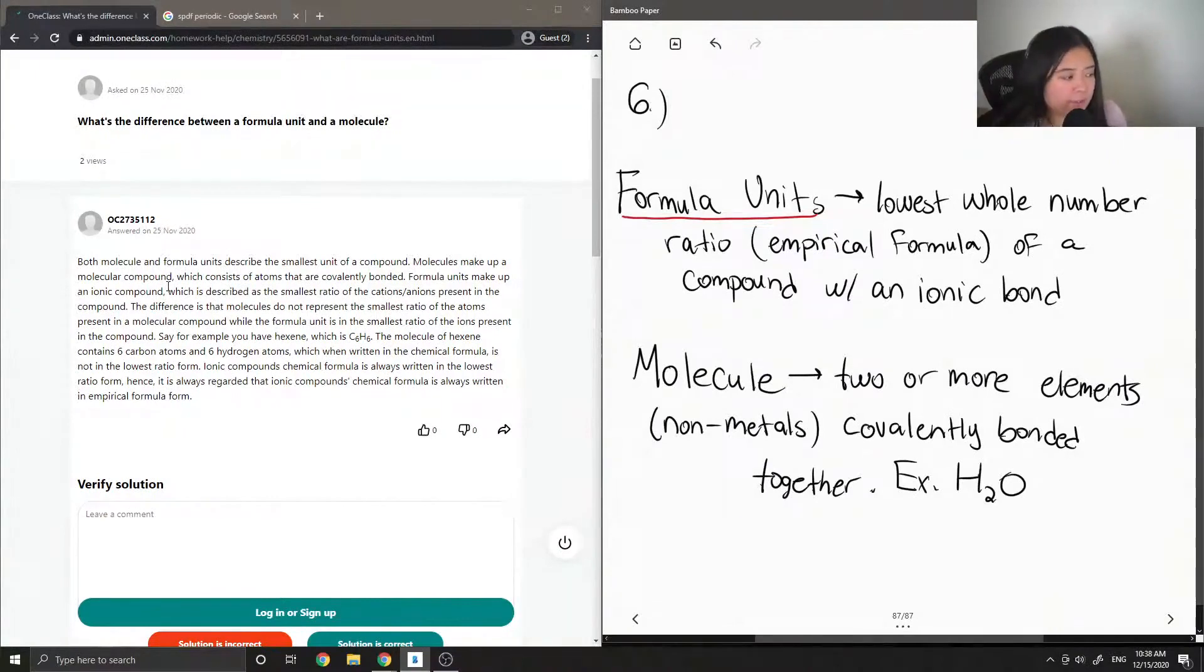The difference is that molecules do not represent the smallest ratio of the atoms present in a molecular compound, while the formula unit is in the smallest ratio of the ions present in the compound. Say, for example, you have hexene, which is C6H6. The molecule of hexene contains six carbon atoms and six hydrogen atoms,